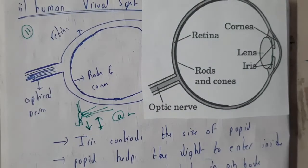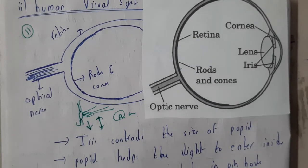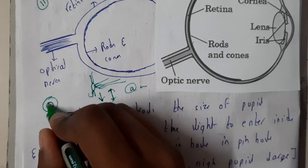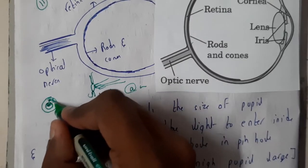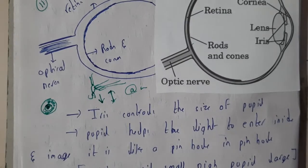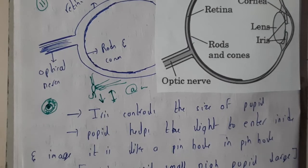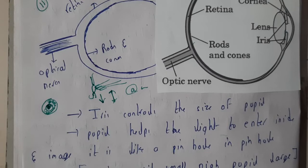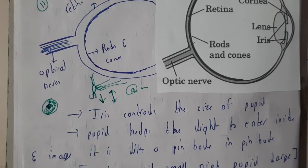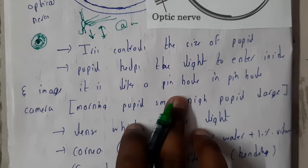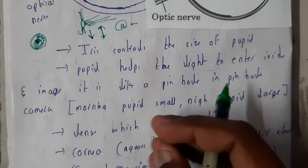At nighttime the pupil size increases, and in the morning the pupil size decreases, according to the intensity of light around you. If you observe your eye, you'll see a black dot — or brown or any kind of dot — and the rest will be white. That black dot is your pupil. At night, if you suddenly turn on and off the lights, the black dot size increases. The pupil helps light to enter inside, acting like a pinhole camera, and the image is reflected — so an upward arrow here reflects as a downward arrow.